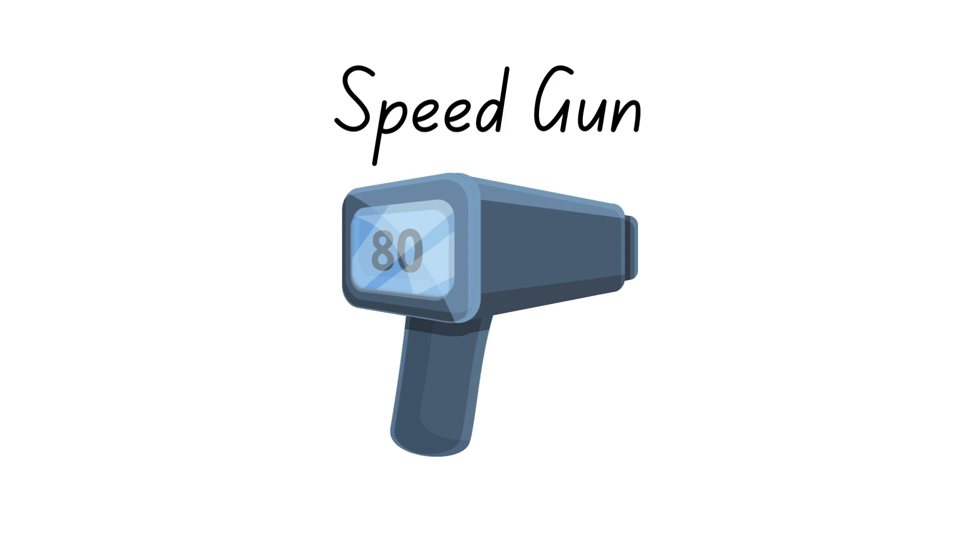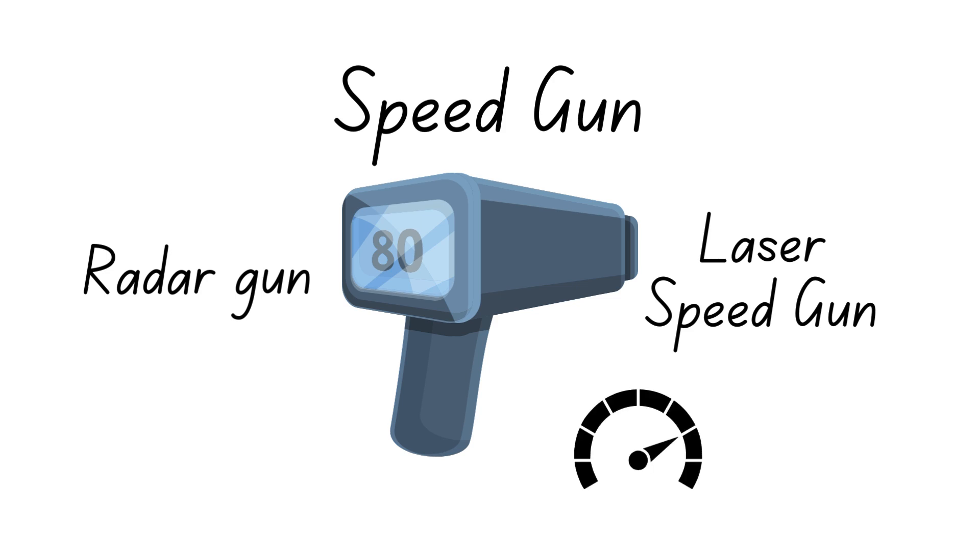A speed gun, also known as a radar gun or laser speed gun, is a device that measures the speed of a moving object.